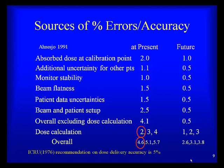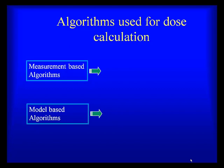Looking at different sources of errors in radiation therapy delivery, to achieve less than 5% overall accuracy of delivery, we need a dose calculation algorithm that is better than 2% accurate. If we hope to deliver radiation with less than 3% error, the corresponding accuracy required in dose calculation is 1%. So we need to strive to develop as good a dose calculation algorithm as possible.